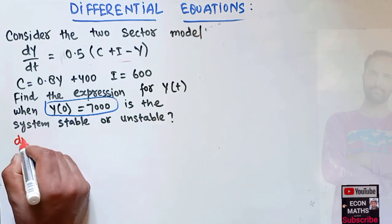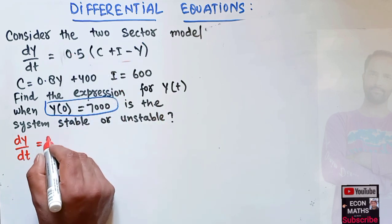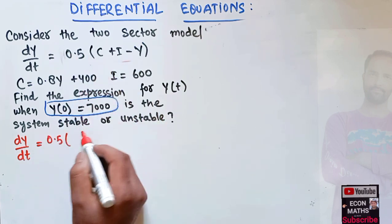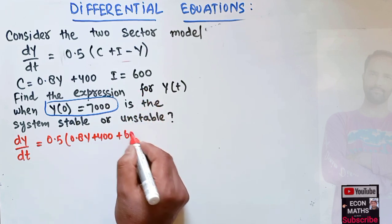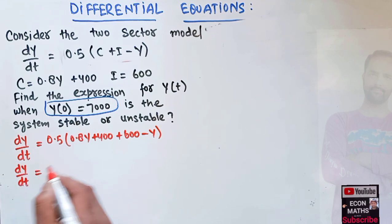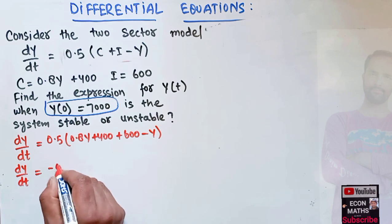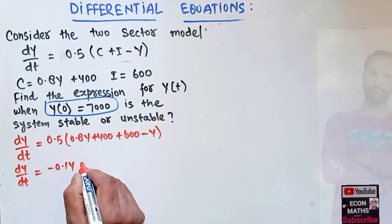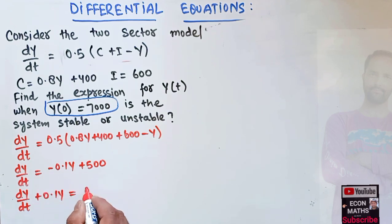We write our expression dy/dt and substitute the values of consumption and investment: 0.5 times (0.8y + 400 + 600 - y). This simplifies to dy/dt = -0.1y + 500. Transposing, we get dy/dt + 0.1y = 500.